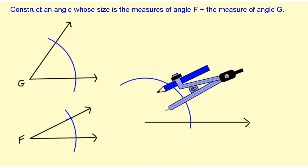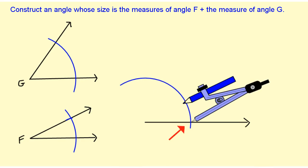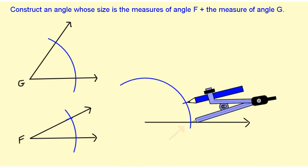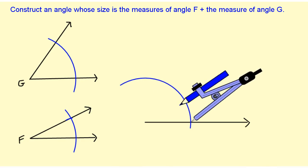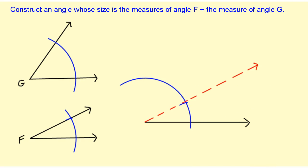Then I'm going to pick up my compass, put it over here, and mark off an arc again. I've gone ahead and used a red dotted line to draw the other ray so that the angle I have drawn so far matches the size of angle F.